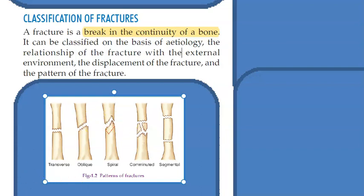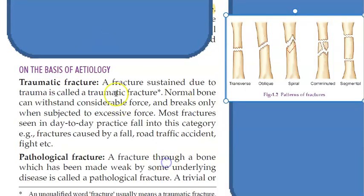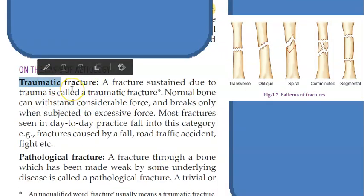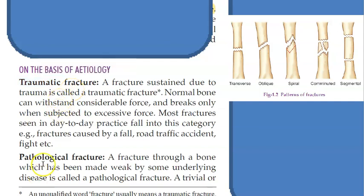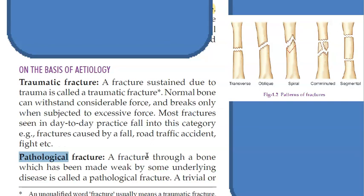Now what are the types of fractures? On the basis of the etiology — the cause — you can undergo a road traffic accident, and that will be a traumatic fracture. A pathological fracture is something where you didn't even do anything significant; just a minor trauma will cause a fracture. That is called a pathological fracture.